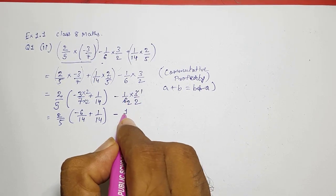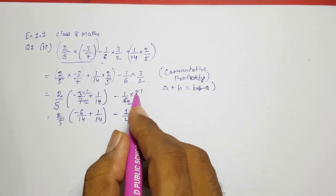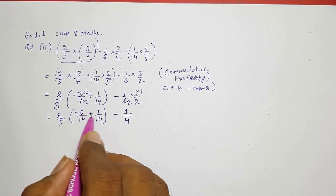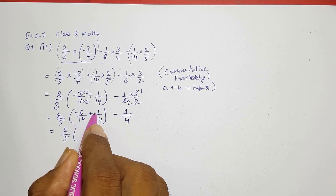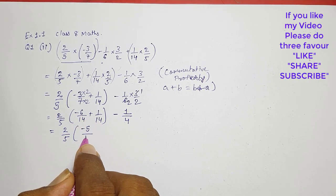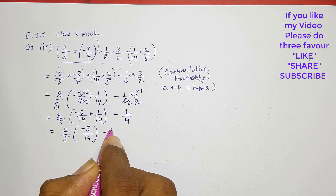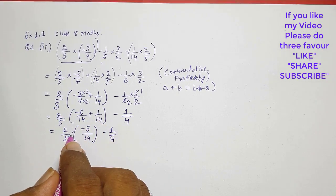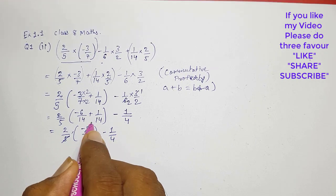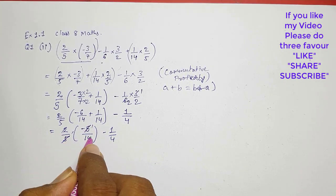And here also if you want to cancel, multiplication sign is there between these two, 3 1s and 3 2s, so directly minus 1, 1s are 1 into 2, 2s are 4. Okay now we are going to add this: 2 by 5 and minus 6 plus 1 that will be minus 5 by 14 minus 1 by 4.